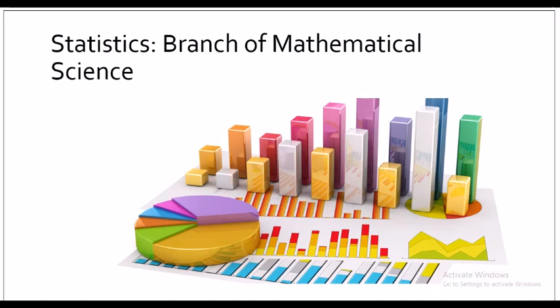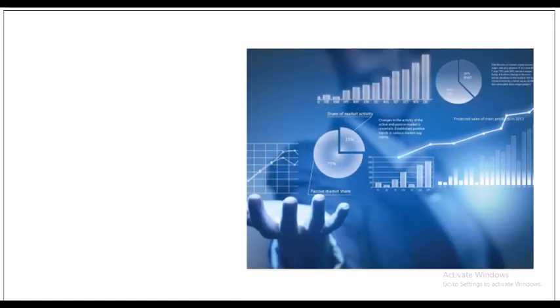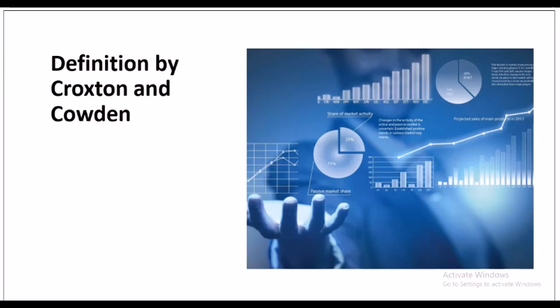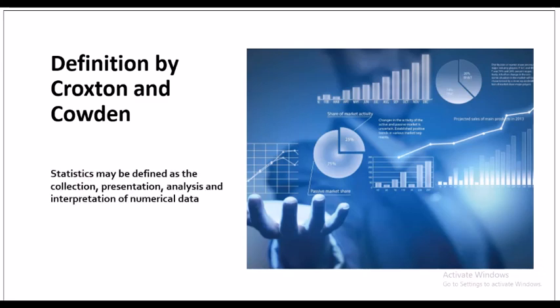Even though there have been many definitions regarding statistics, Croxton and Corden have given a very simple and concise definition. In their view, statistics may be defined as the collection, presentation, analysis, and interpretation of numerical data. This definition clearly points out the important stages in a statistical investigation.